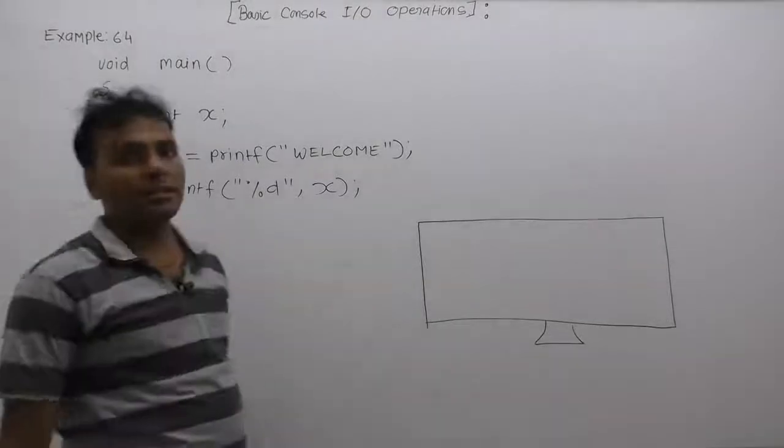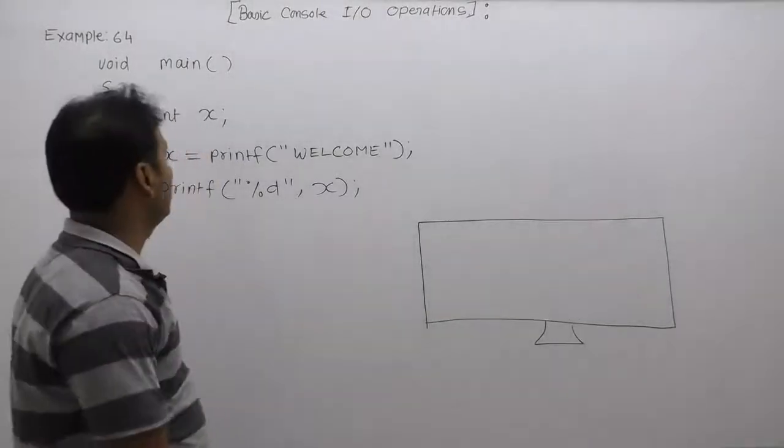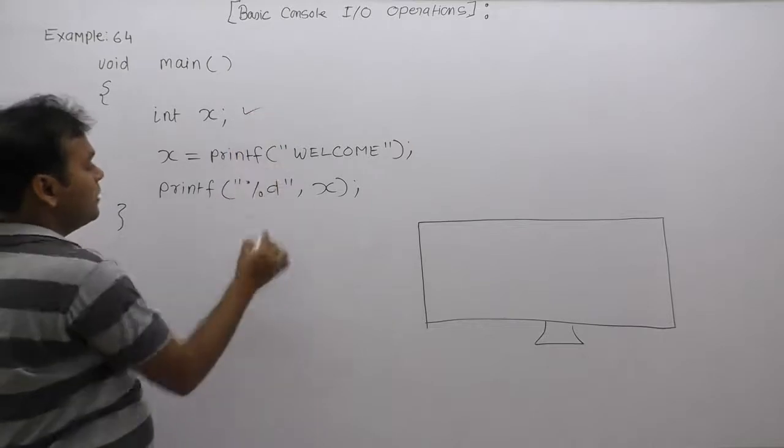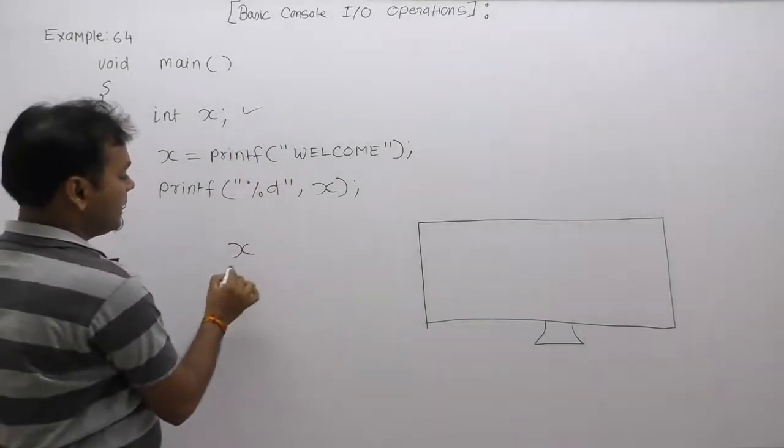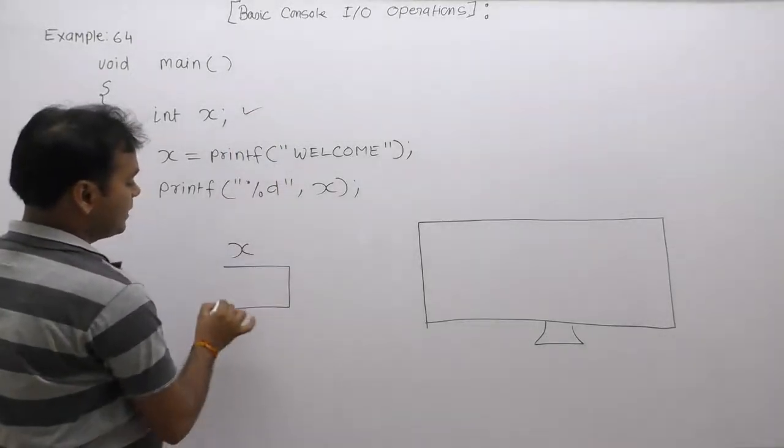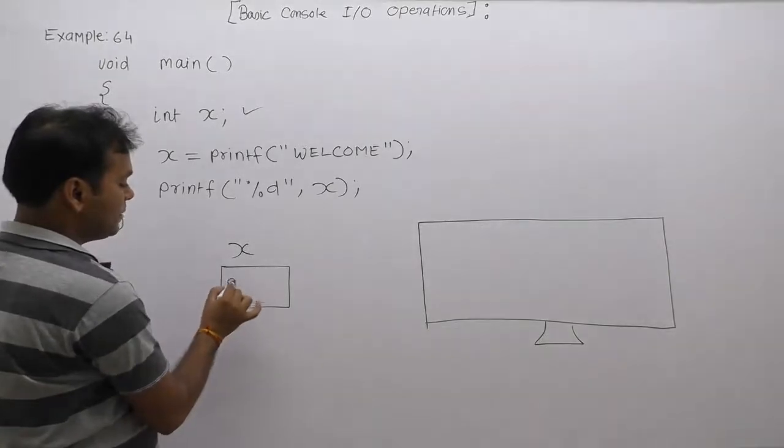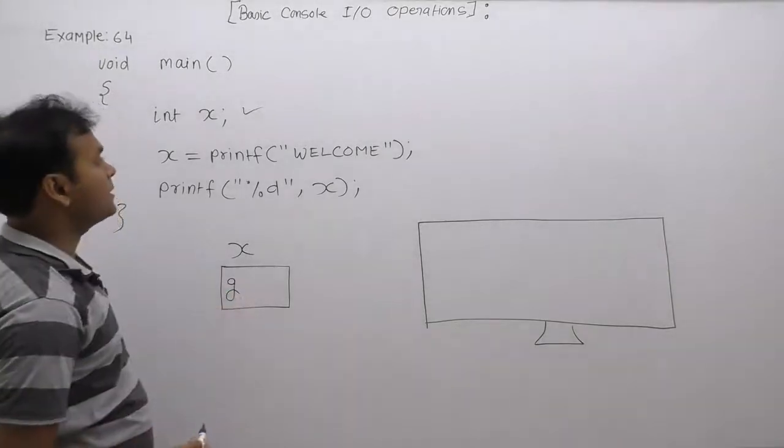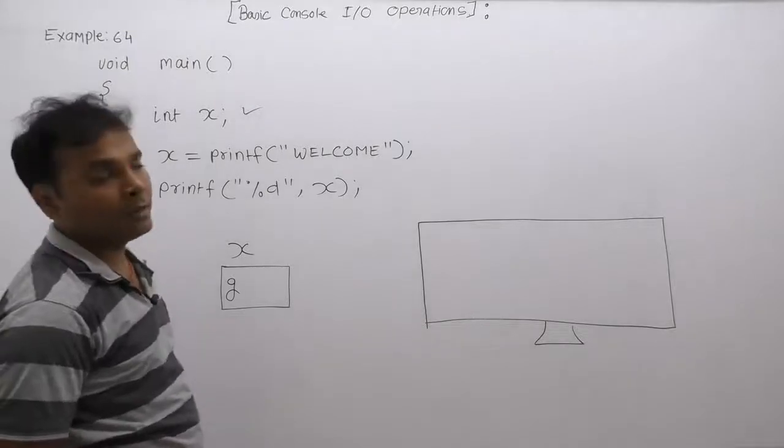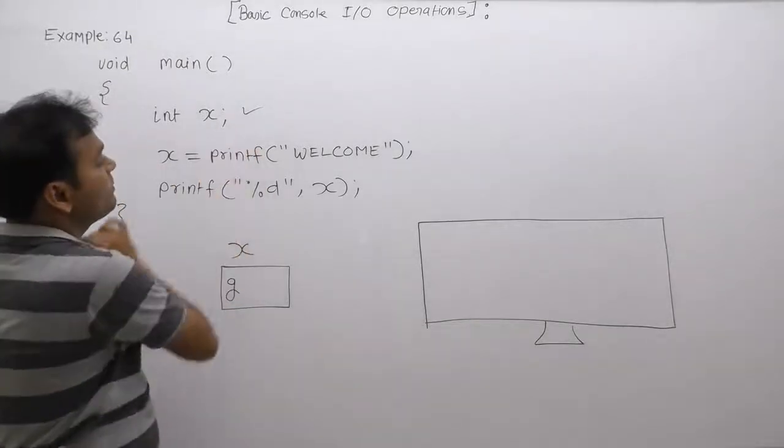Next, what is the result of the given application? Here we are declaring variable x, therefore x is created inside stack memory. The initial value or default value of x is garbage or an unknown value because we are not assigning any default value.